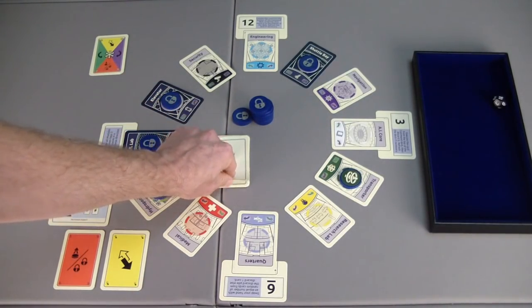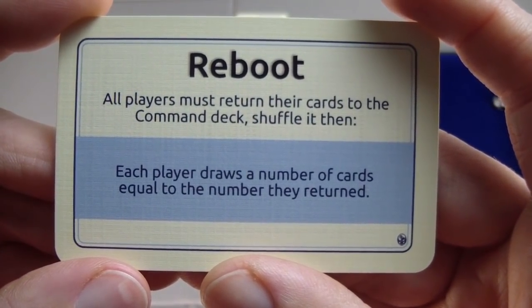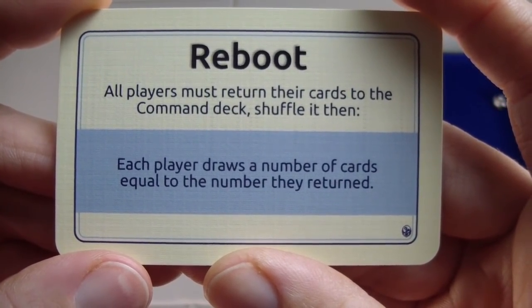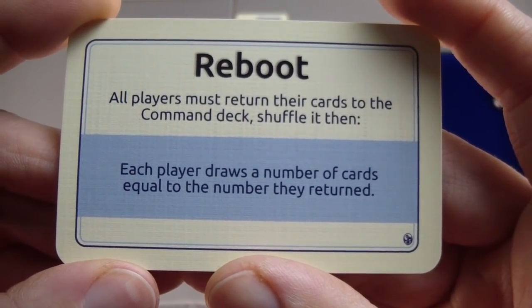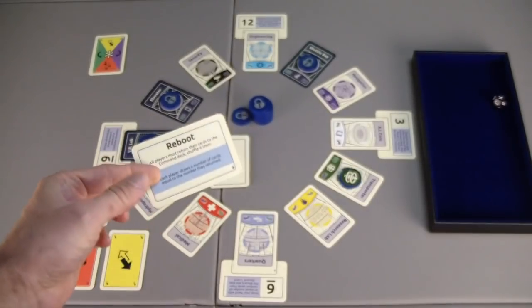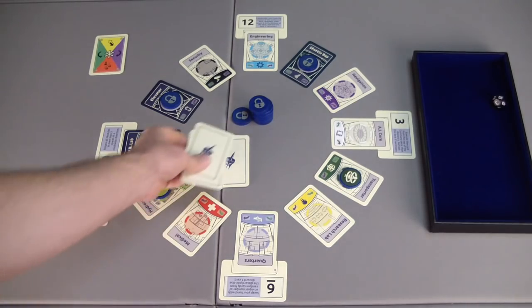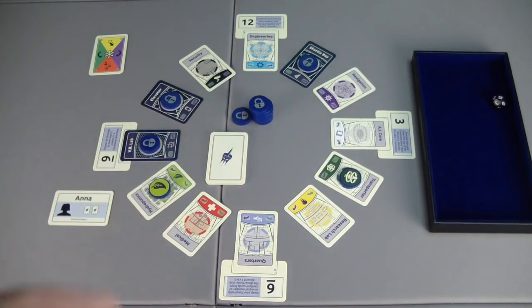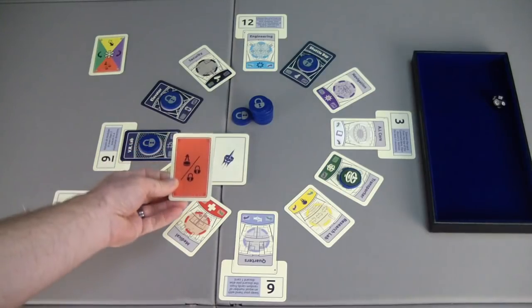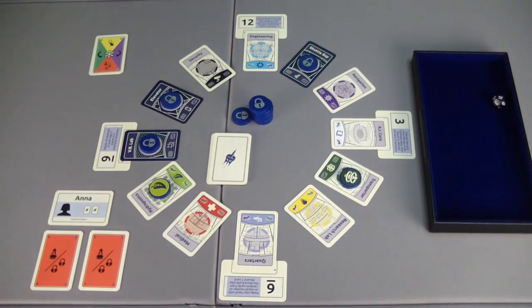We have a deploy lock. And we have a glitch. All players must return their cards to the command deck, shuffle it, and then each player draws a number of cards equal to the number they returned. That's unfortunate because when a glitch is played, it gets discarded immediately. But you do not add a card in its place. So I am going to return these two cards to the deck, shuffle it. And now I will only draw two because that's what I had to return to the deck. And we got our lock, our deploy lock back. That's what we have, two deploy locks.